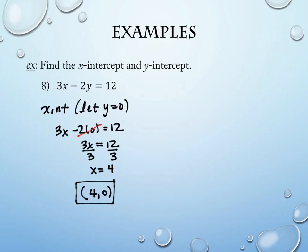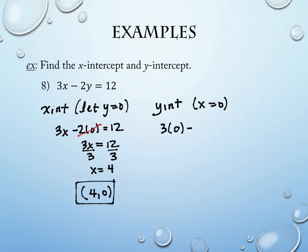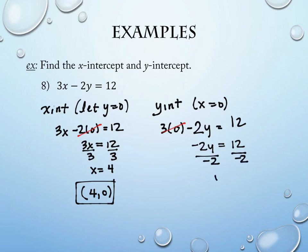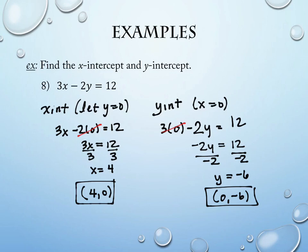To find the y-intercept, let x = 0: 3(0) - 2y = 12 simplifies to -2y = 12. Divide by -2 and y = -6. So the y-intercept as an ordered pair is (0, -6).